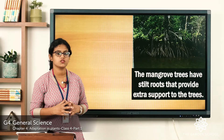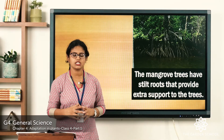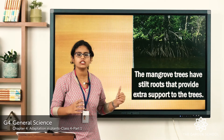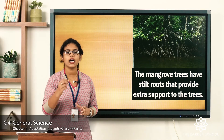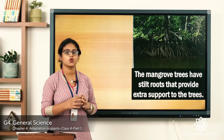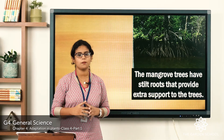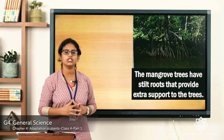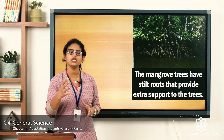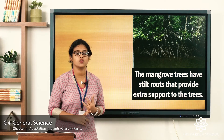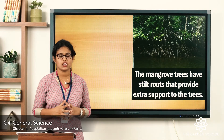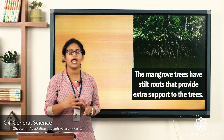Another feature of these mangroves is they have stilt roots. Mangrove trees have stilt roots. If you see this picture, stilt roots means their roots diverge from stems and branches. Diverge means separated. Their roots get separated from stems and branches so that it gives physical support to the plant — extra support to the tree by holding it tightly to the soil.